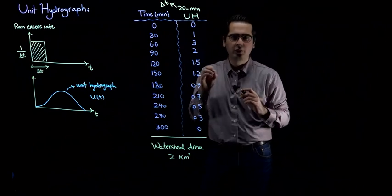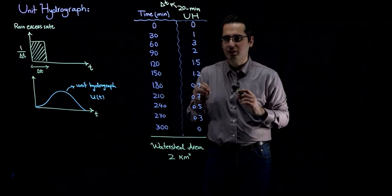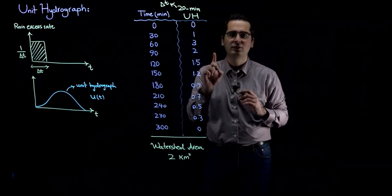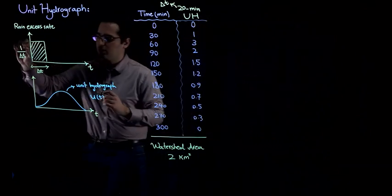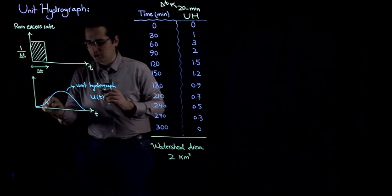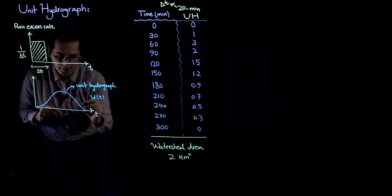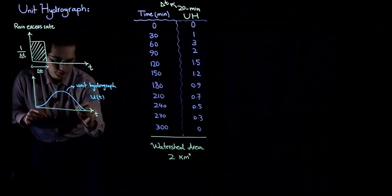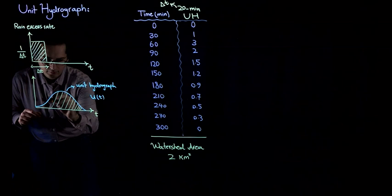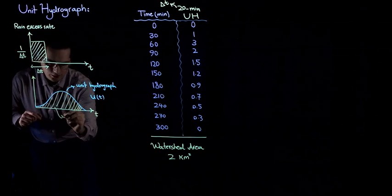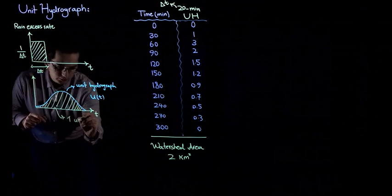How do we verify that? We know that a unit hydrograph is generated because of one unit of rainfall excess. If you have one unit of rainfall excess, that's going to generate your unit hydrograph. So if you calculate the area under this hydrograph, the value is going to be 1 unit.